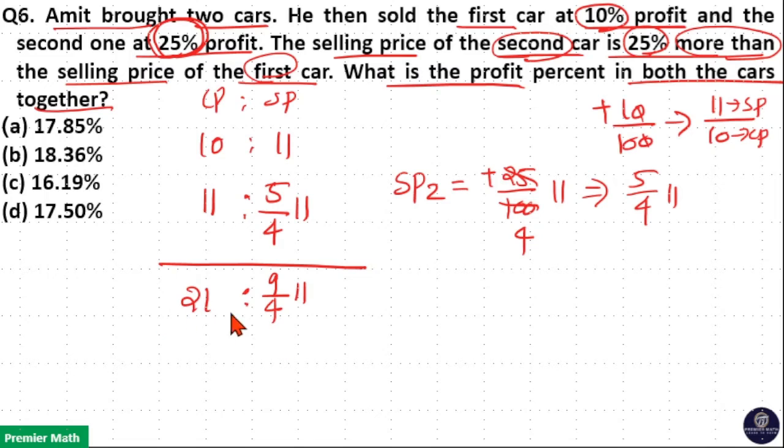If we cancel it with 3, 3 goes 7 times in 21, 3 goes 3 times in 9. So 7 is to 3 by 4 of 11, 4 will come here that is 28 is to 33 is the ratio.